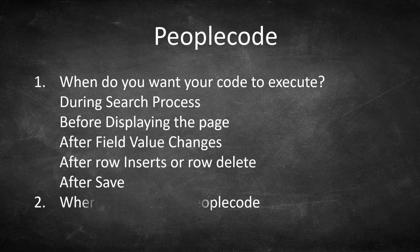The second important part is understanding where to place the PeopleCode — meaning which specific event to write it in. There are multiple events associated with various items such as menus, components, records, component record fields, and so on. Once we have understood each event and its behavior, we will be able to figure out exactly which event to write the PeopleCode in. Once both questions are answered, we can start writing PeopleCode as per the requirement.